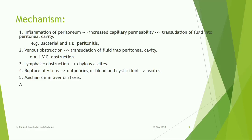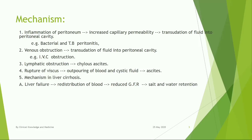Mechanism in liver cirrhosis: liver failure causes redistribution of blood, reduced glomerular filtration rate, and salt and water retention leading to ascites.